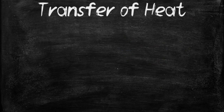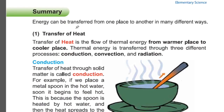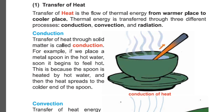Now we will know about transfer of heat. Go to page 35. Energy can be transferred from one place to another in many different ways. Transfer of heat is the flow of thermal energy from a warmer place to a cooler place. You must remember that heat always transfers from a warmer place to a cooler place. Thermal energy is transferred through three different processes: conduction, convection, and radiation.